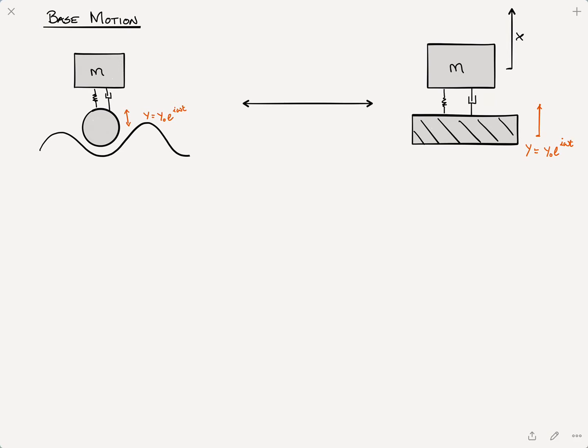If we translate that into a model that we're used to, it might look something like what I've drawn on the right here, where we've got a mass spring damper system. Just because of the nature of the problem, x is now upward. And the idea is, we haven't seen this in previous videos, but what if the base is now being shaken around? What is the effect on the mass due to that?